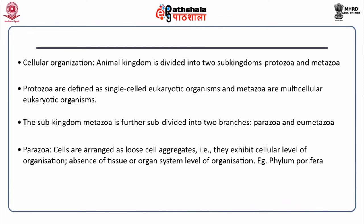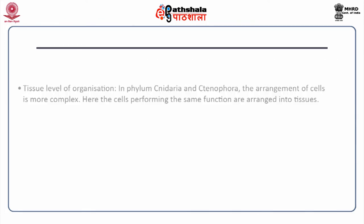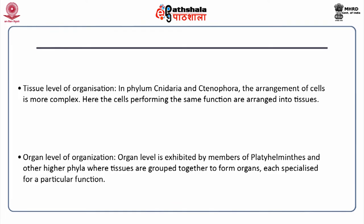The example of parazoa is phylum porifera. Eumetazoa is a clade comprising all other major animal phyla except porifera. The embryo gets layered during gastrulation and exhibits either tissue or organ system level of organization. In phylum cnidaria and ctenophora, cells performing the same function are arranged into tissues. Organ level is exhibited by members of platyhelminthes and other higher phyla, where tissues are grouped together to form organs, each specialized for a particular function.